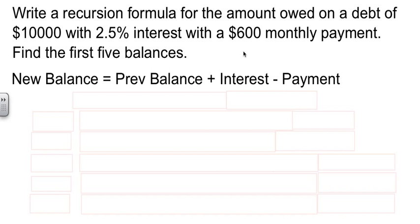And then they want us to find the first five balances after you start making your payments. Well, see if this makes sense to you. The new balance, the new amount of money you owe, will be the previous amount, plus the amount of interest that's charged, minus how much payment you make. And if I know where I was, I add the amount of interest, and I subtract how much I paid, that'll tell me where I'm at now.